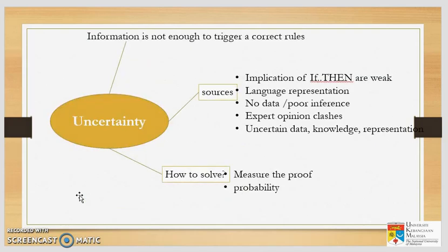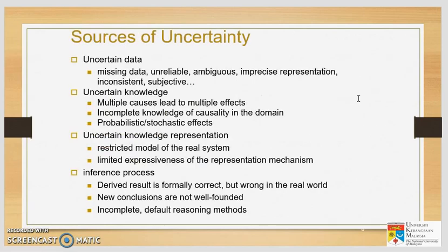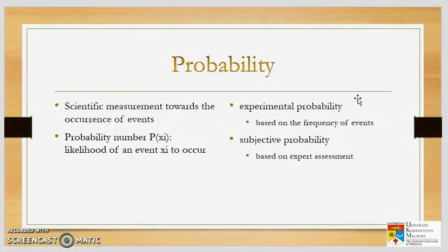Uncertainty means information is not enough to trigger a correct rule. We have uncertainty because the implication of if-then rules are weak, and also due to language representation problems, no data or poor inference, expert opinion, and uncertain data, knowledge, and representation. For example, even in cooking, if you ask how much salt to put, the answer is usually 'roughly' — that is also uncertainty. To solve this, we need to measure the proof — that is probability. Those are the sources of uncertainty. We will continue with probability after this — pause and go get pen and paper.